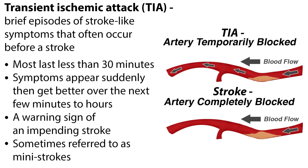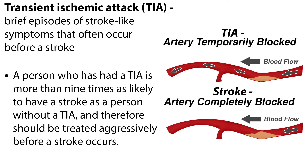Brief episodes of stroke-like symptoms often occur before a stroke, and are referred to as a transient ischemic attack, or TIA. Most TIAs last less than 30 minutes, in which symptoms appear suddenly and then get better over the next few minutes to hours. However, TIAs generally reflect advanced atherosclerotic disease and are a warning sign of an impending stroke. TIAs are sometimes referred to as mini strokes. A person who has had a TIA is more than nine times as likely to have a stroke as a person without a TIA, and therefore should be treated aggressively before a stroke occurs.